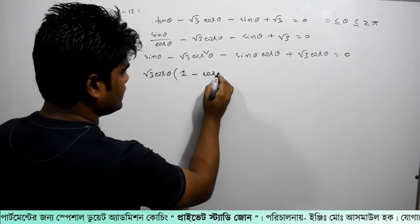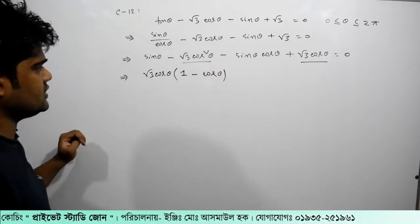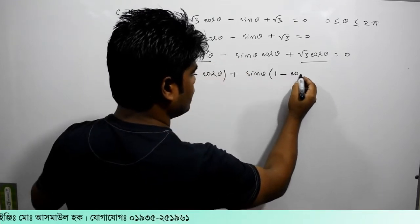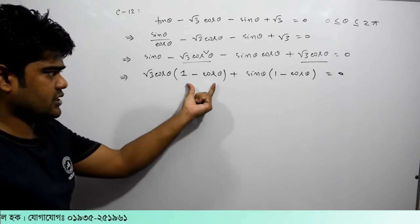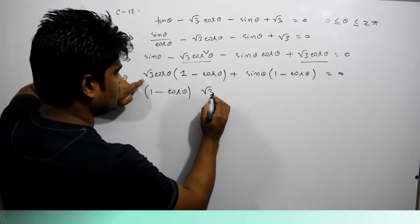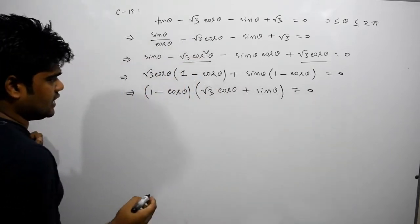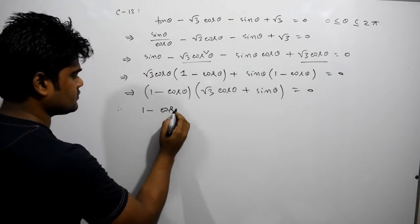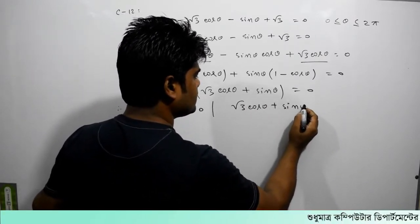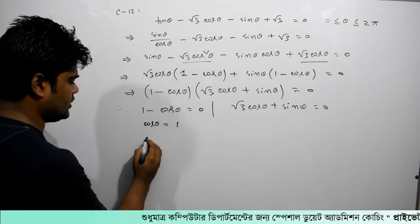Now we consider sin θ equal to 1 minus cos θ. We also look at cos θ plus sin θ equal to 0, and then cos θ is equal to 0.